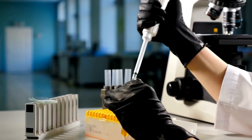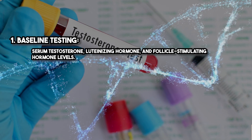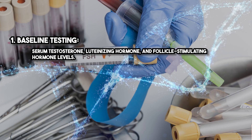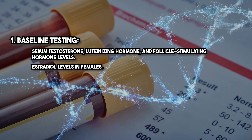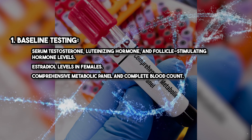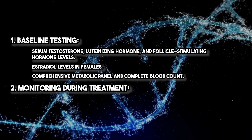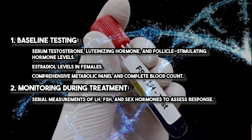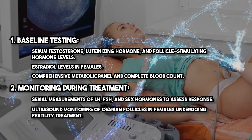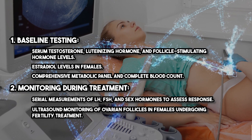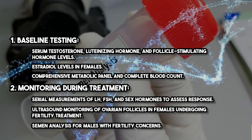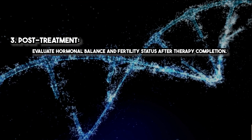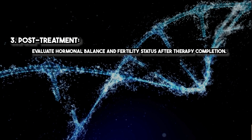Comprehensive laboratory testing is essential before and during gonadurilin therapy. Baseline testing includes serum testosterone, luteinizing hormone, and follicle-stimulating hormone levels, estradiol levels in females, and a comprehensive metabolic panel and complete blood count. During treatment, monitoring includes serial measurements of LH, FSH, and sex hormones to assess response, ultrasound monitoring of ovarian follicles in females undergoing fertility treatment, and semen analysis for males with fertility concerns. Post-treatment evaluation should assess hormonal balance and fertility status after therapy completion.